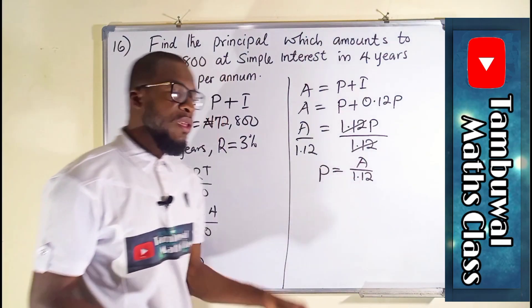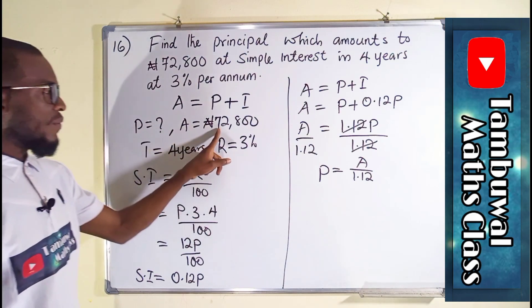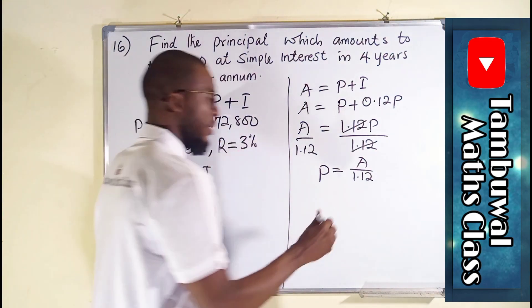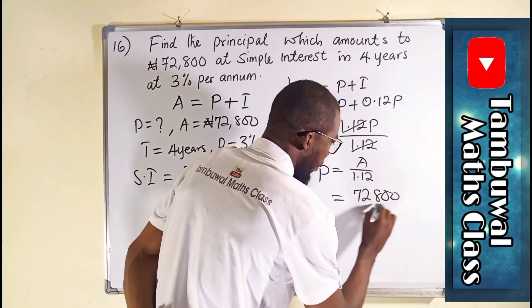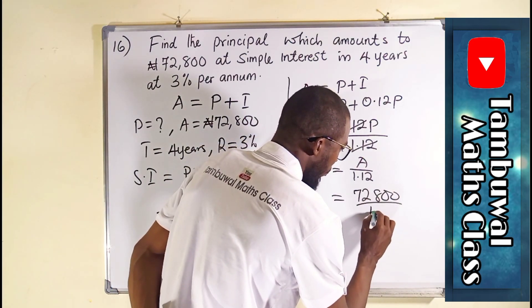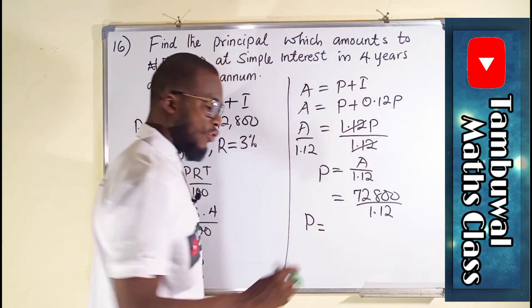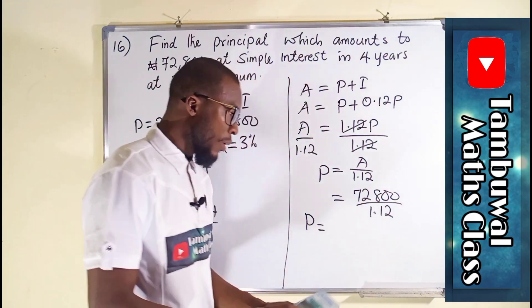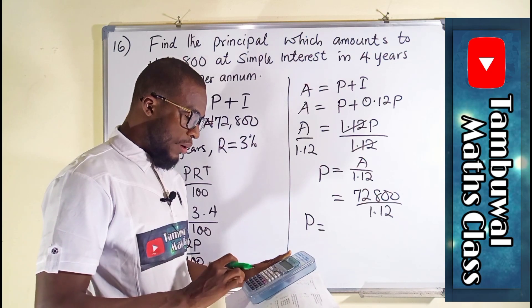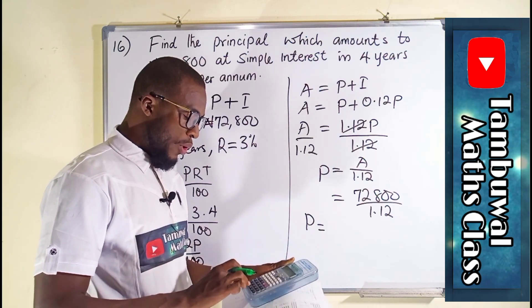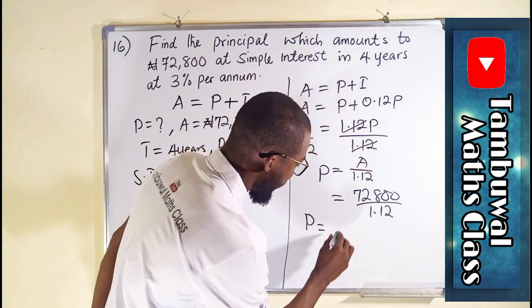But what is this A? A is given from the initial question. You can see it here, 72,800. So this is equal to 72,800 divided by 1.12. And finally, our principal will be equal to 72,800 divided by 1.12. And we have 65,000 Naira.